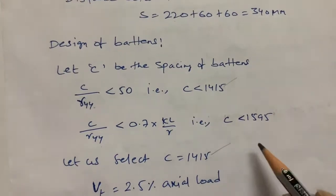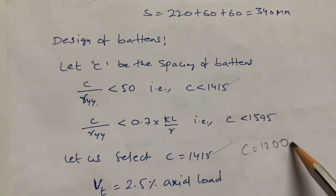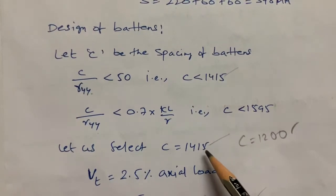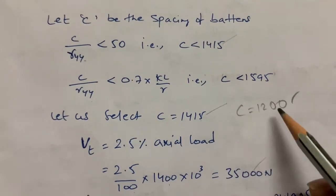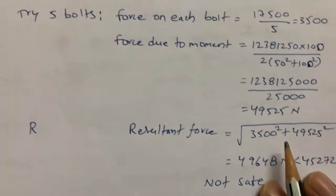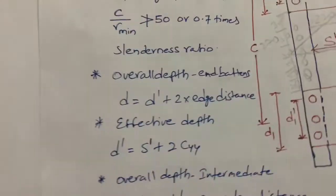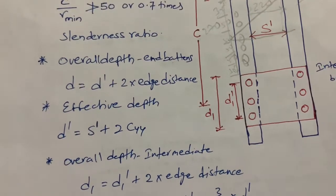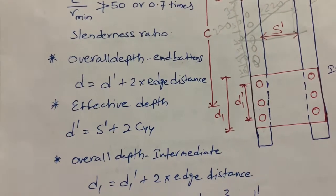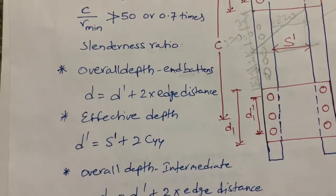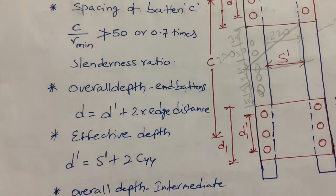If you reduce C to 1200 mm and replace 1415 in all calculations, you will get lower force values and the design will be safe. While designing lacing and battens, you must follow IS800:2007 specifications. If you are familiar with the IS800:2007 code book, it is easy to solve these problems. Thank you for watching.